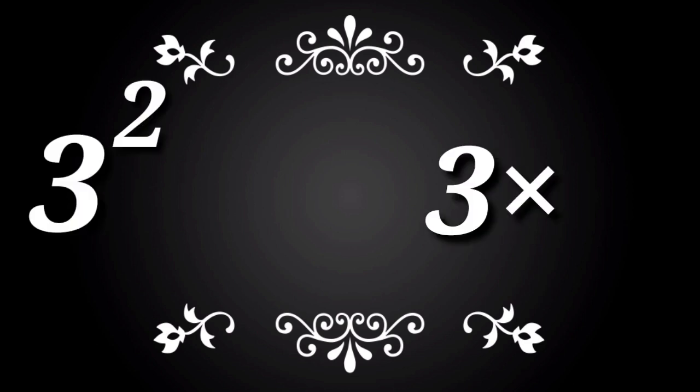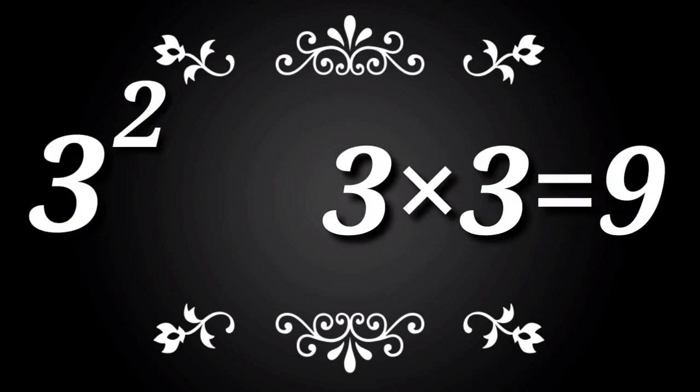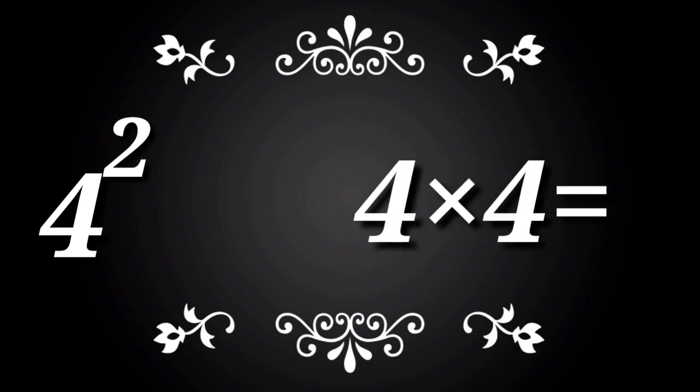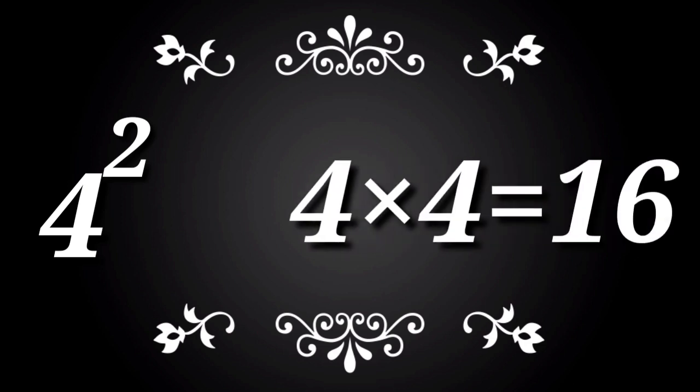3 square. 3 into 3 is equal to 9. 3 3s are 9. 4 square. 4 into 4 is equal to 16. 4 4s are 16.